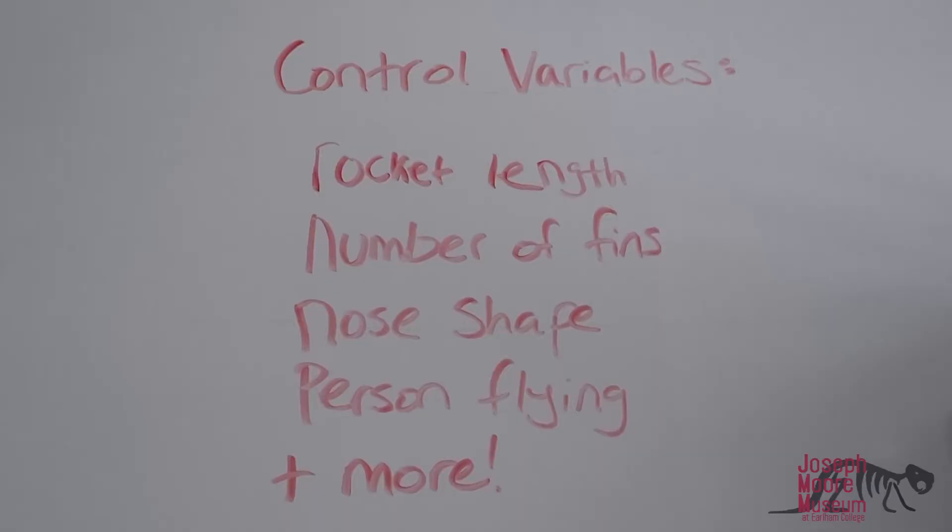The control variable is what you keep the same. This might be the length of the rocket, the number of fins, or the shape of the nose.